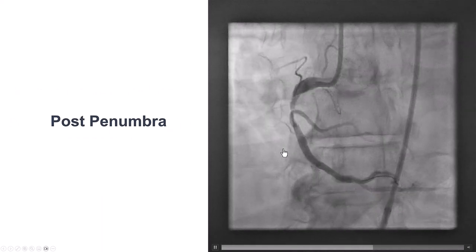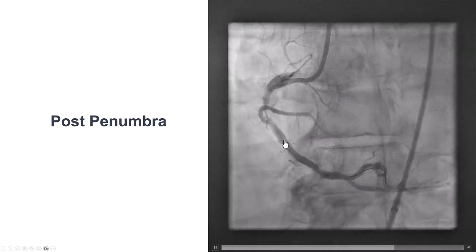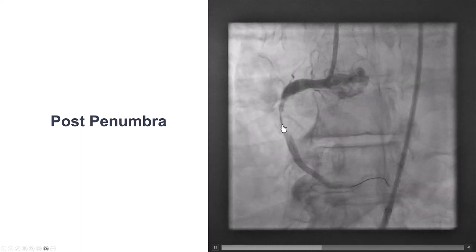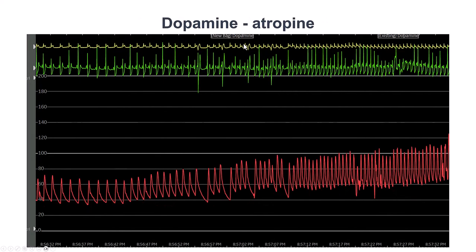After doing that, the vessel is now much better. We no longer see the large filling defect, although there is still some stenosis with plaque versus thrombus. As often happens with right coronary artery MIs, we did have significant hypotension and bradycardia — blood pressure went down to the 50s and 60s — but after giving atropine and dopamine, heart rate and blood pressure recovered.